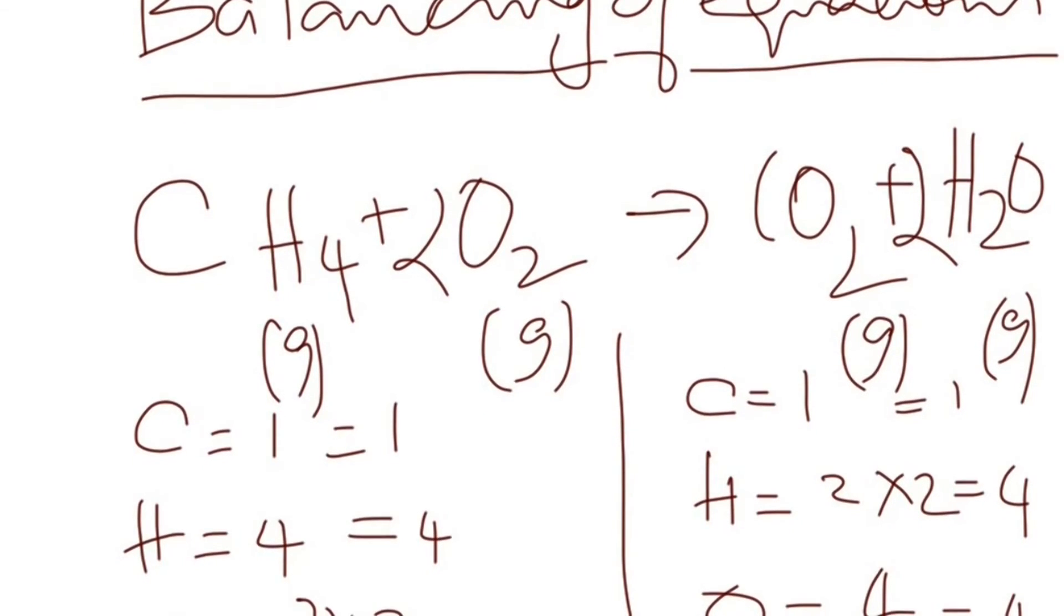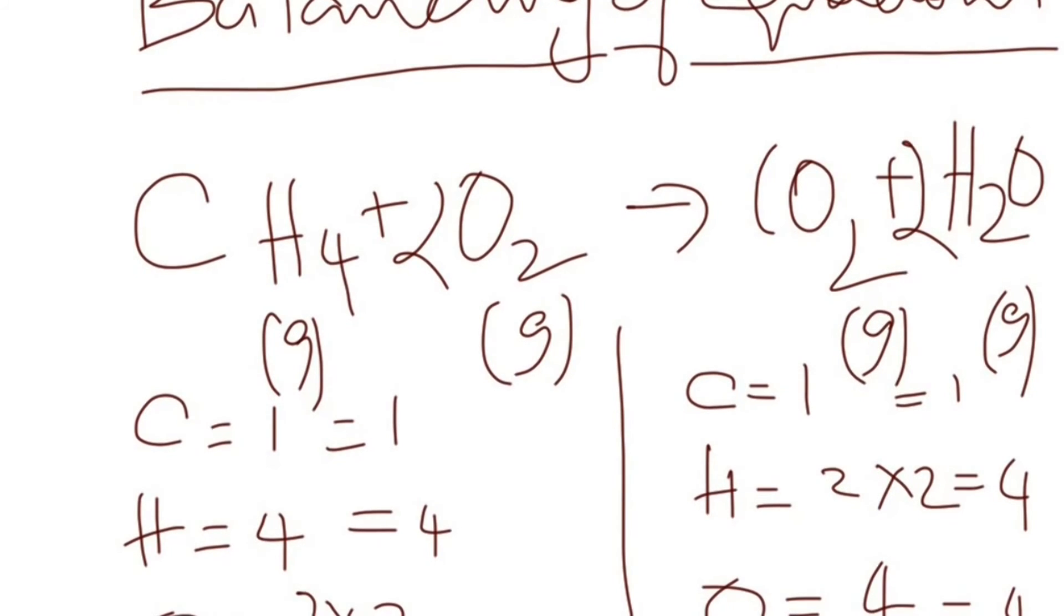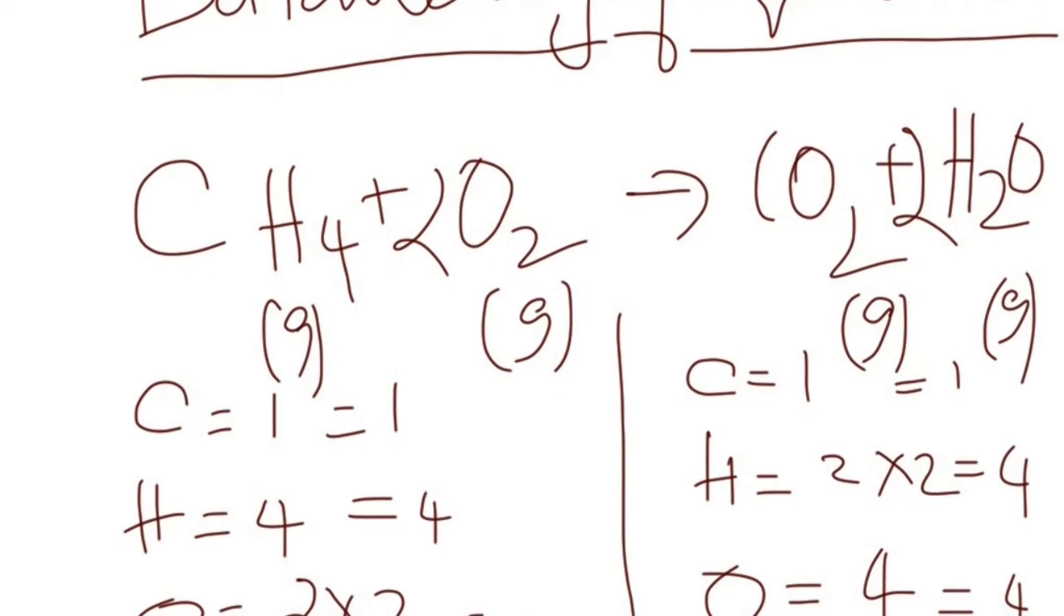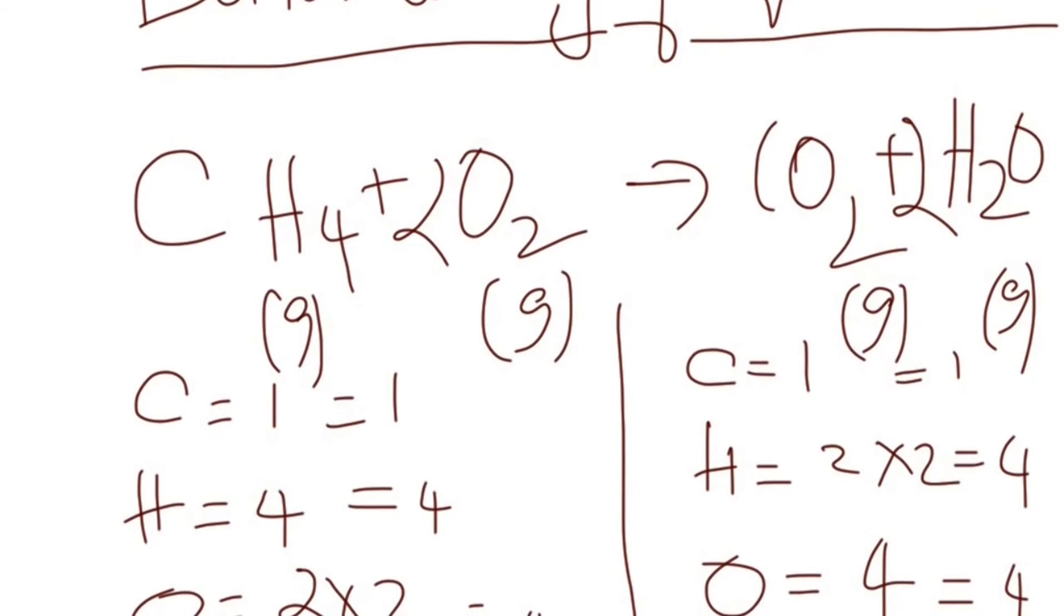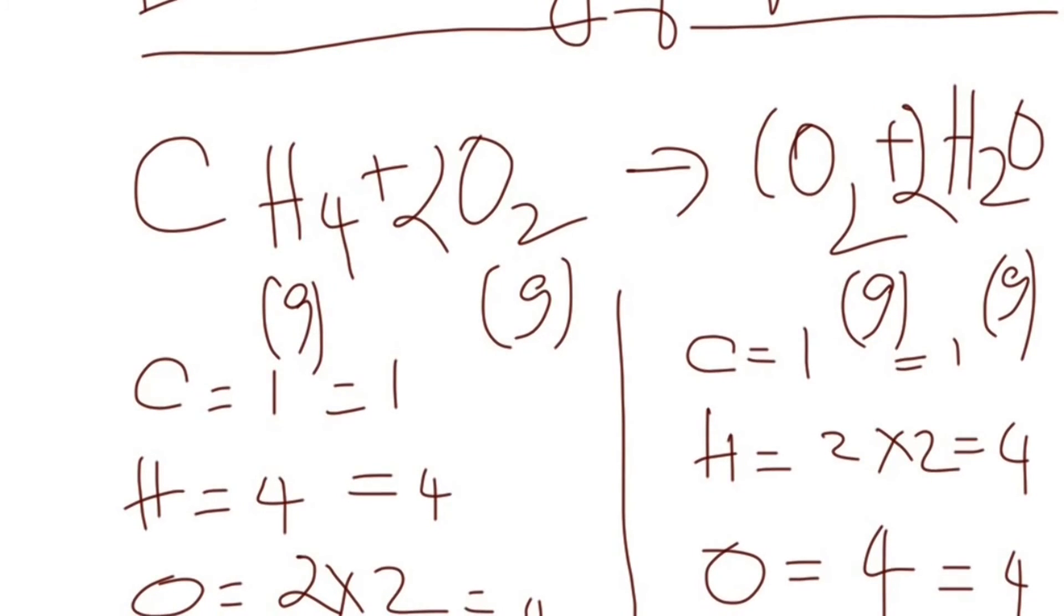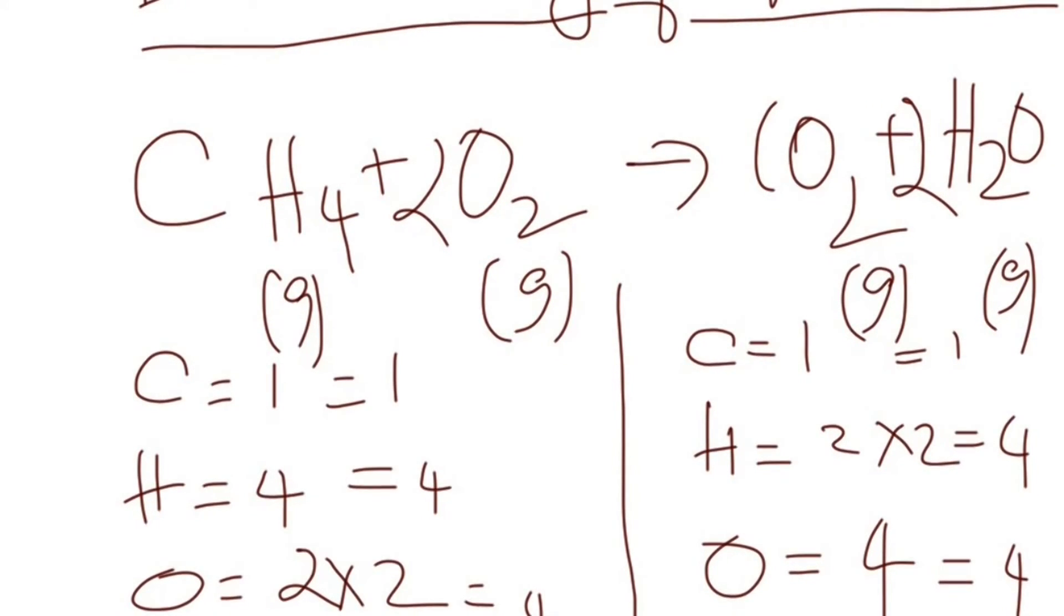Now if you count oxygen atoms, there are two in carbon dioxide and two in water, which means we have four oxygen atoms on the right side. In order to make the oxygen atoms equal, you want to add a two in front of the oxygen in the reactant side. So now we have four oxygens.